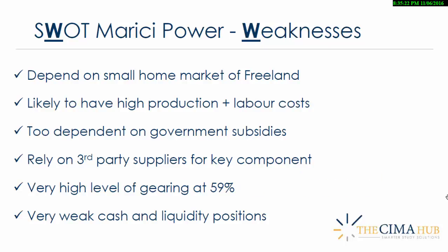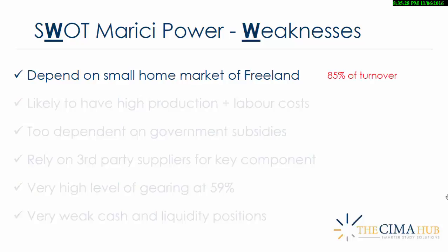What about the weaknesses? Let's focus on them one at a time. Freeland — they're dominant there, but they're extremely dependent on this market. 85% of their revenues come from Freeland. We're told in the future strategy section of the pre-seen, for example, that Marici wants to maintain its position as market leader. I would say if this is the extent of their ambition, they're going to run into problems, and in particular big problems given the cuts to subsidies in the Freeland market.